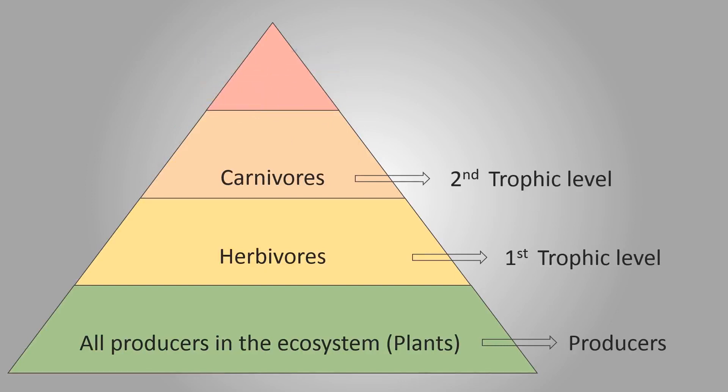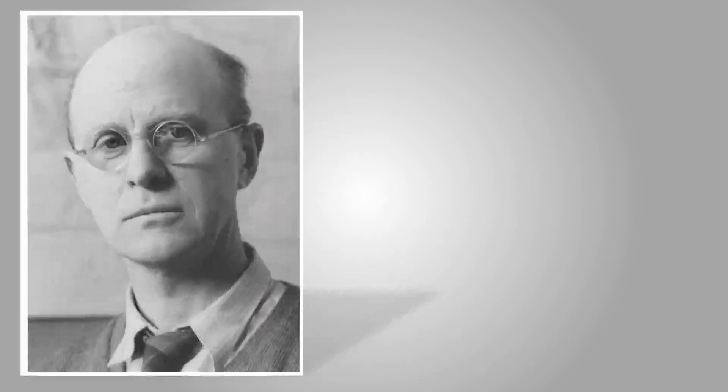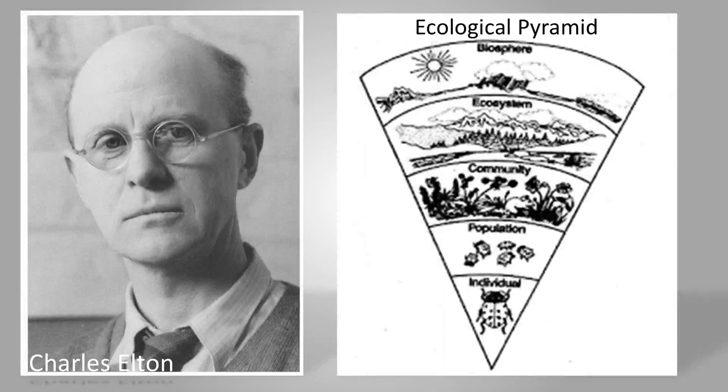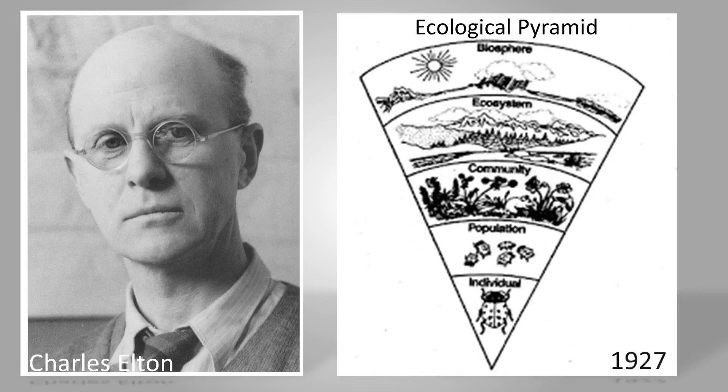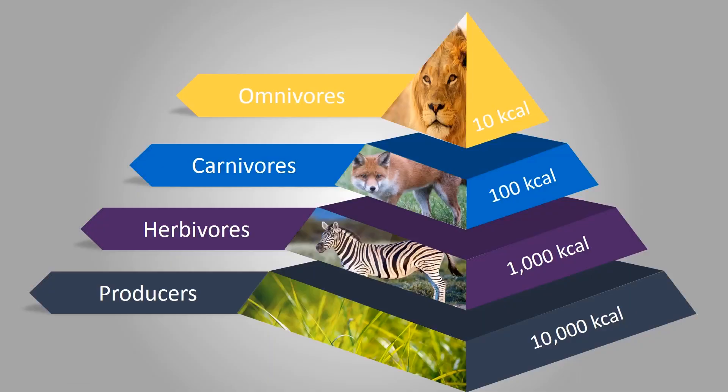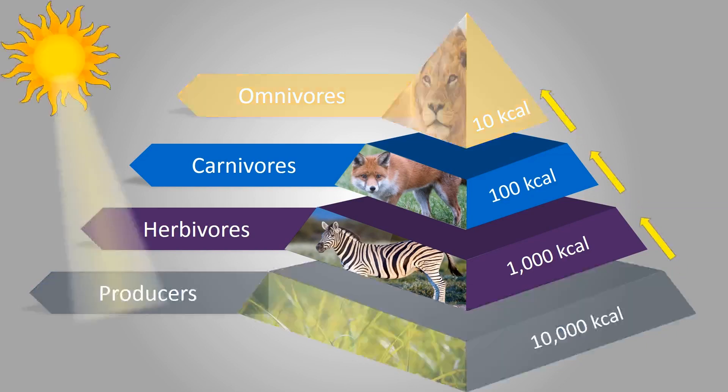And on the top of all are omnivores as third trophic level. Do you know who introduced the concept of pyramid? A British scientist, Charles Elton, first proposed the concept of ecological pyramid in 1927. The amount of energy and number of organisms gradually decreases from producers at the lowest level to the top consumers at the highest level.